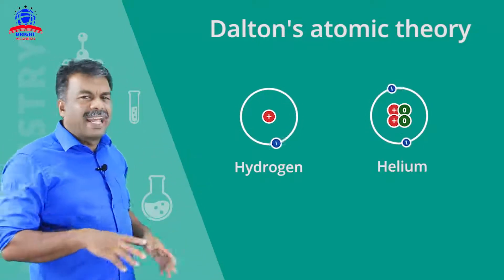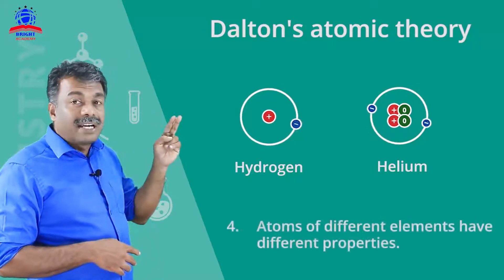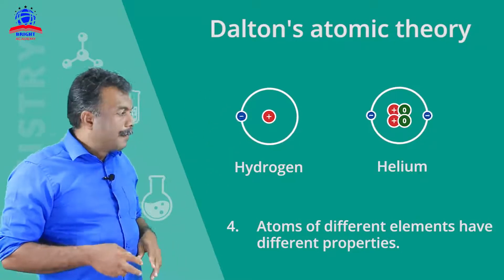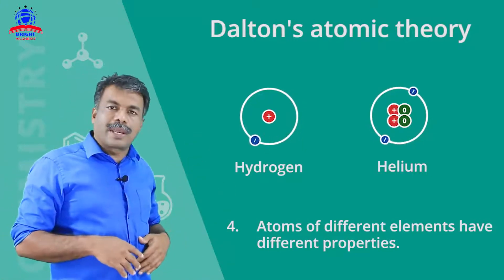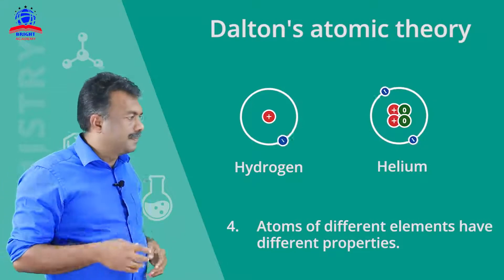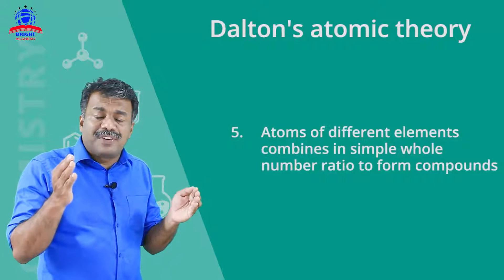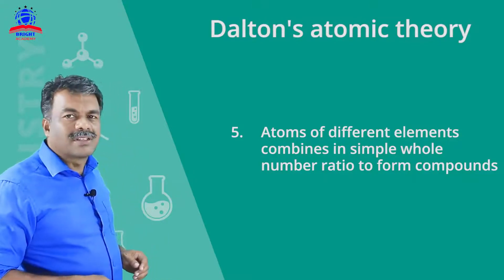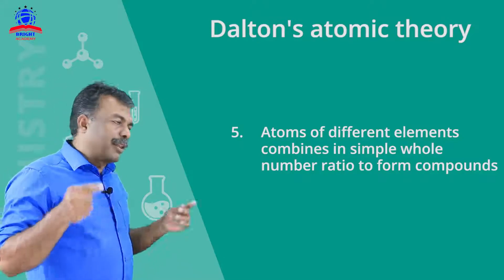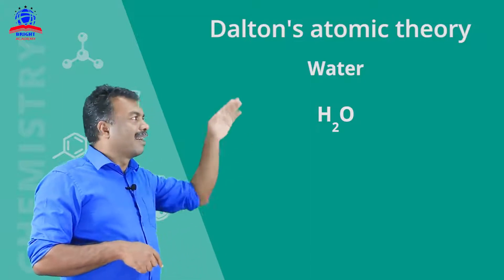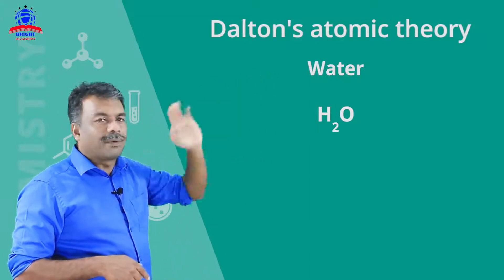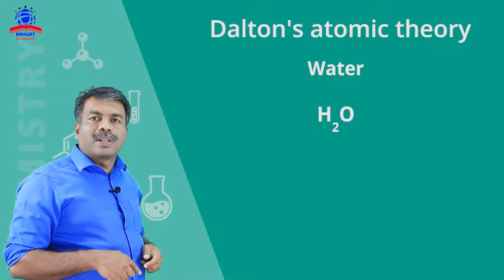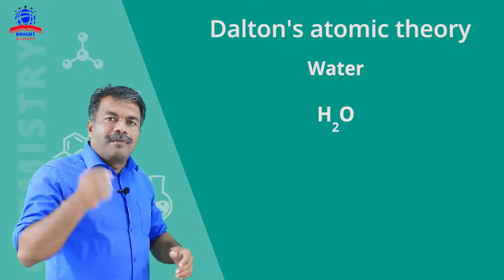Atoms of different elements are different — they have different properties. Fifth and last postulate: atoms of different elements combine in simple whole number ratios to form compounds. For example, water is a molecule with formula H2O — hydrogen and oxygen combine in a simple ratio to form water.